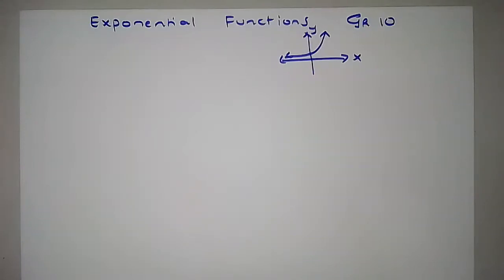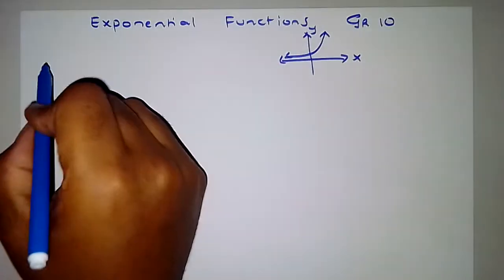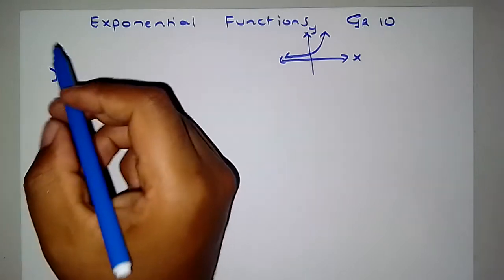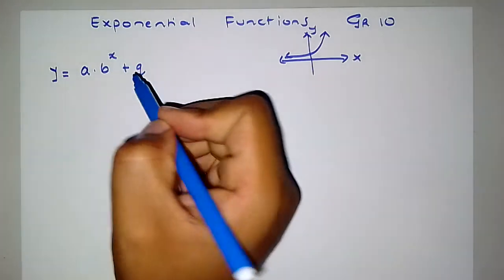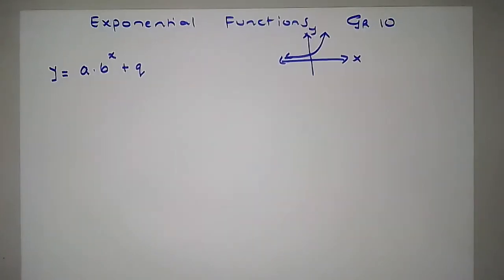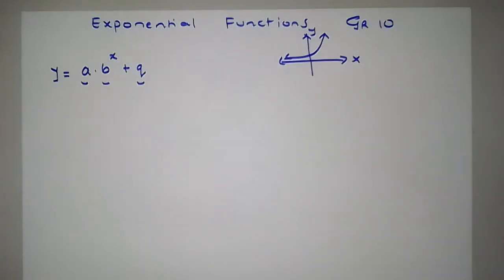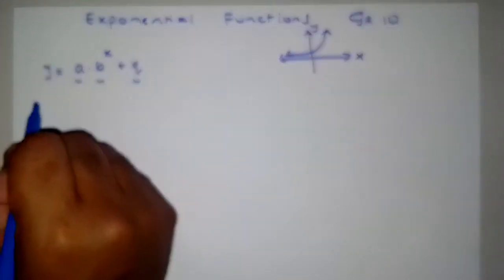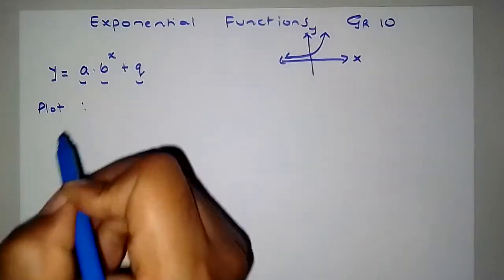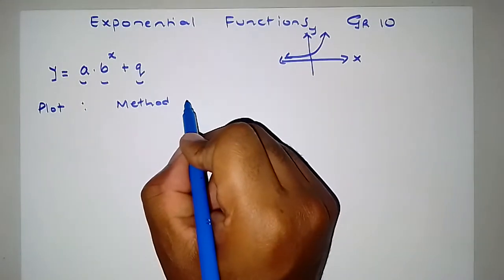Welcome once again to Academic Coordinates. In this video we're looking at exponential functions. They have a general form which is y = a · bˣ + q. Here a, b, and q are constants which affect the function. Let us plot the function to appreciate it a bit more using the table method.